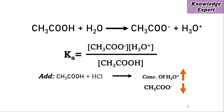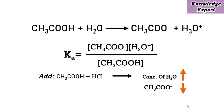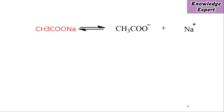The dissociation of CH₃COOH (acetic acid) will be suppressed in a similar manner if we have an excess amount of CH₃COO⁻ ions. We get those CH₃COO⁻ ions by adding a strong electrolyte like CH₃COONa. CH₃COONa dissociates as CH₃COO⁻ plus Na⁺. Because of having the common ion CH₃COO⁻, the dissociation of acetic acid will get suppressed.